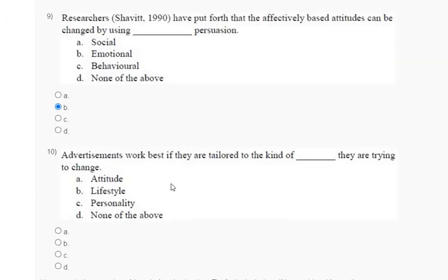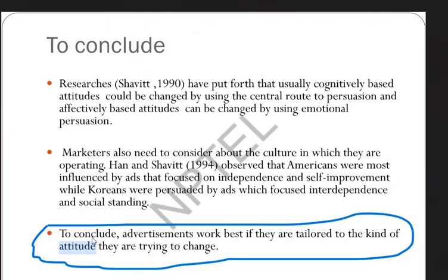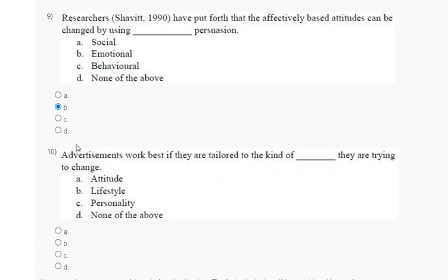Question number 10: advertisements work best if they are tailored to the kind of dash they are trying to change — attitude, lifestyle, personality, or none of the above. The explanation is: to conclude, advertisements work best if they are tailored to the kind of attitude they are trying to change. So the correct answer for question number 10 is option number A.